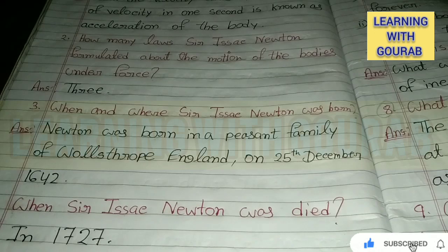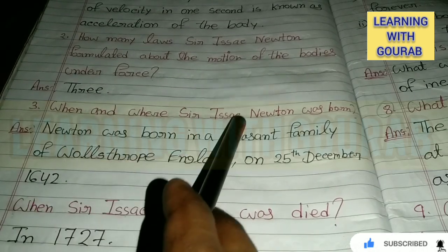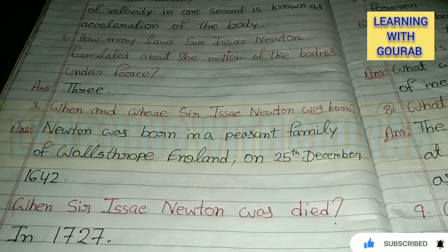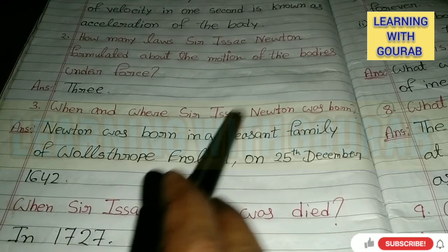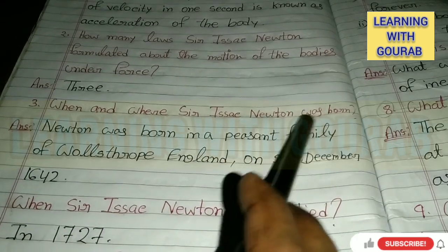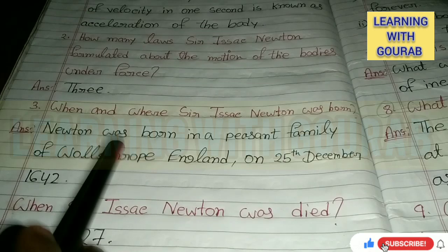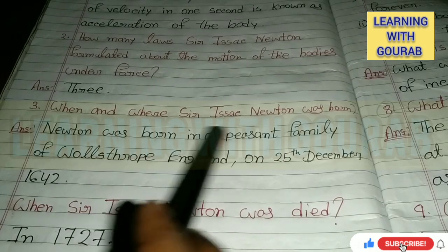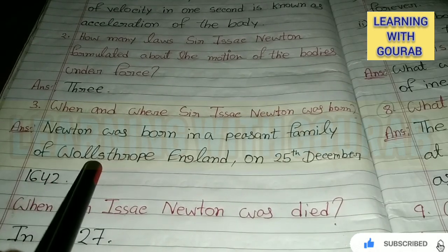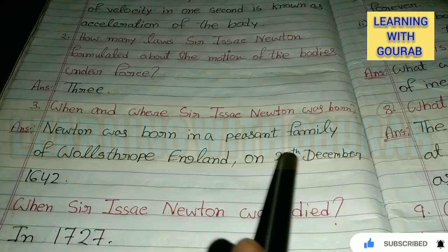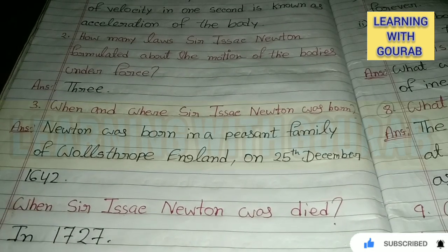Next question: When and where was Sir Isaac Newton born? Answer: Newton was born in a peasant family of Woolsthorpe, England, on 25th December 1642.